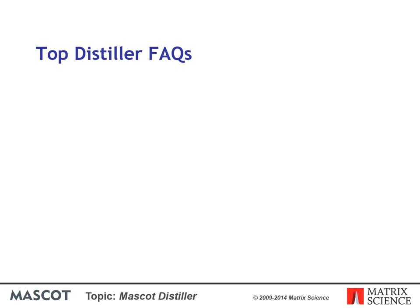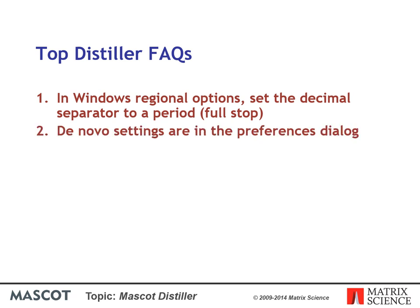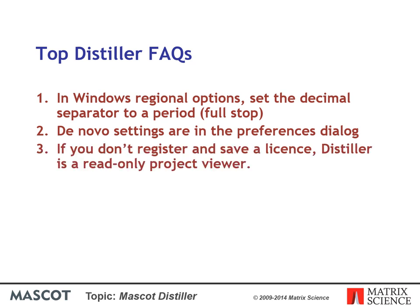Finally, a few of the most frequent technical support questions. Some of the file access libraries are not fully localised, so in Windows regional options you need to set the decimal separator to a period. The de novo settings are in the preferences dialog and most of these settings will be the same as on the Mascot search tab. And if you don't register and save a licence, Distiller is just a read-only project viewer.